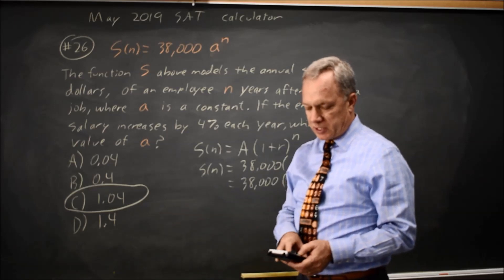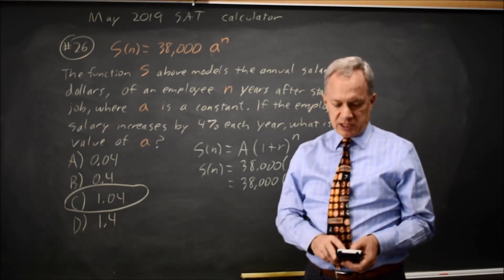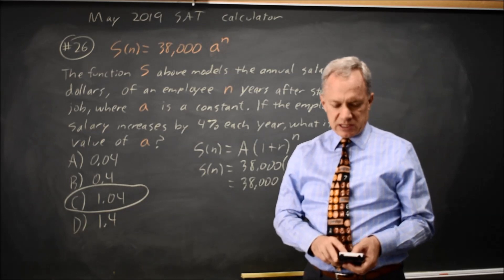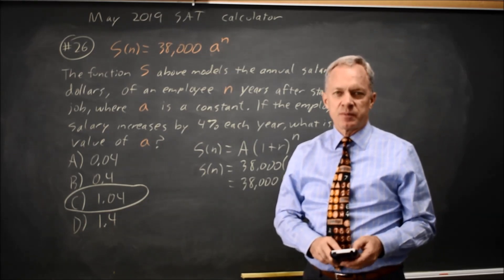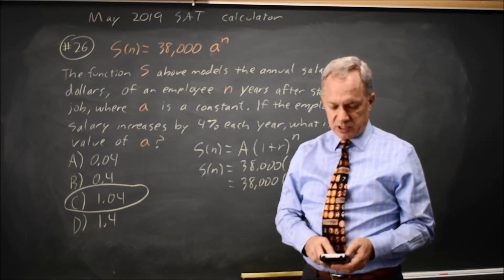so 0.04 is wrong. Choice B does not drop as quickly, but we go from 38,000 the first year to 15,000 the second year and 6,000 the third year, and again, we are not growing at 4%. The salary is shrinking.